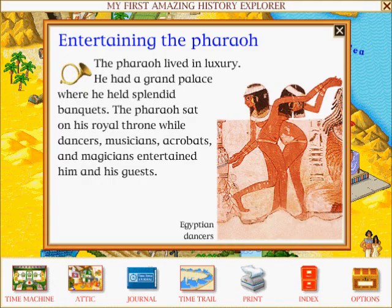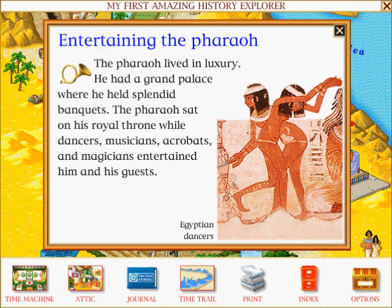Entertaining the Pharaoh: The pharaoh lived in luxury. He had a grand palace where he held splendid banquets. The pharaoh sat on his royal throne while dancers, musicians, acrobats, and magicians entertained him and his guests.